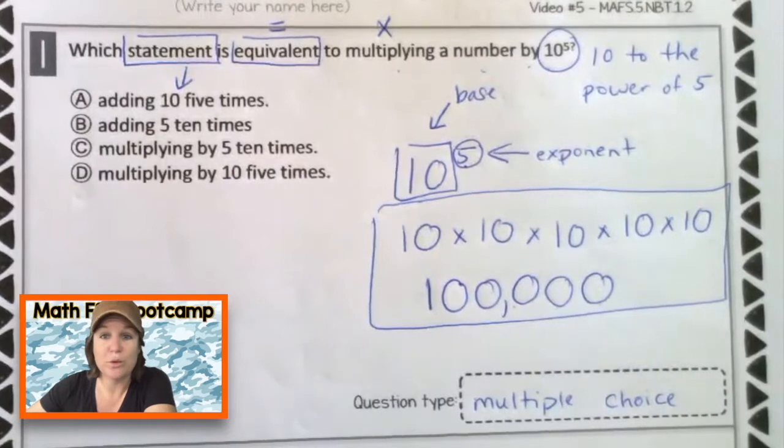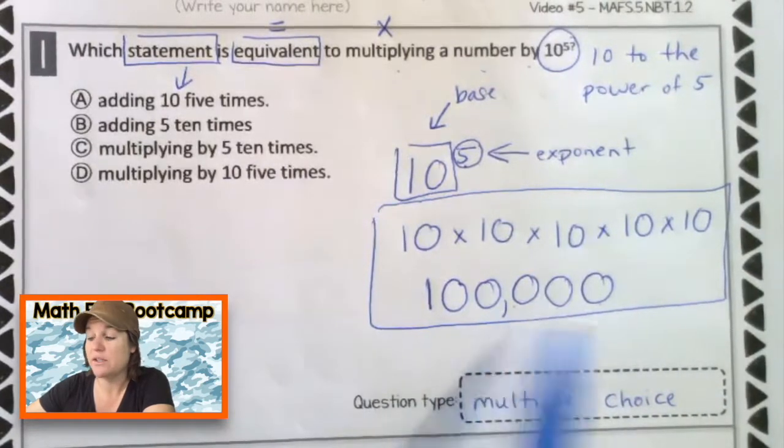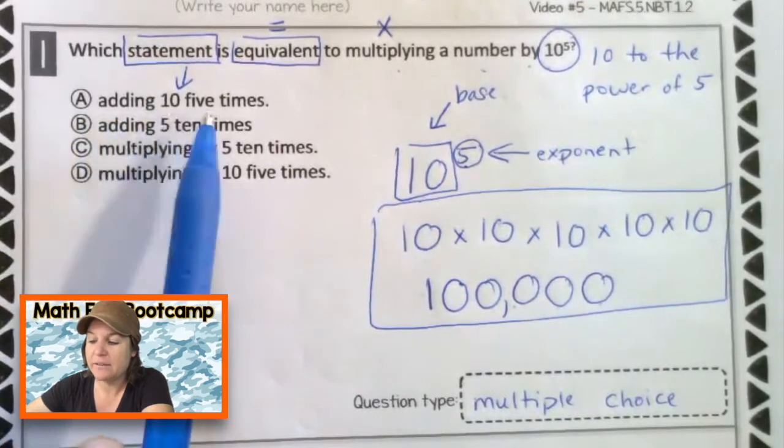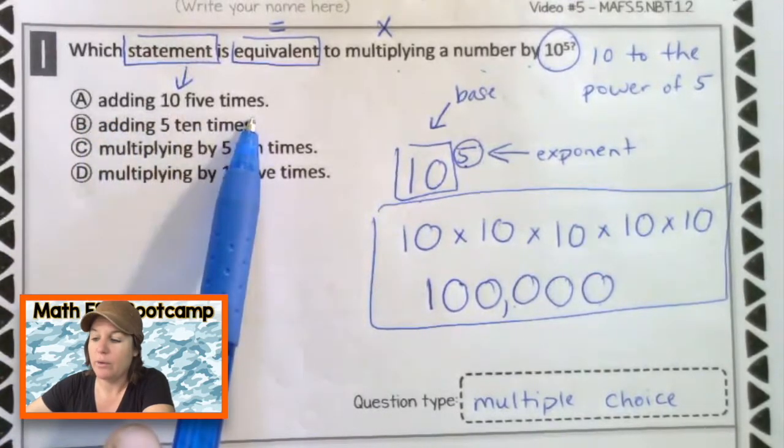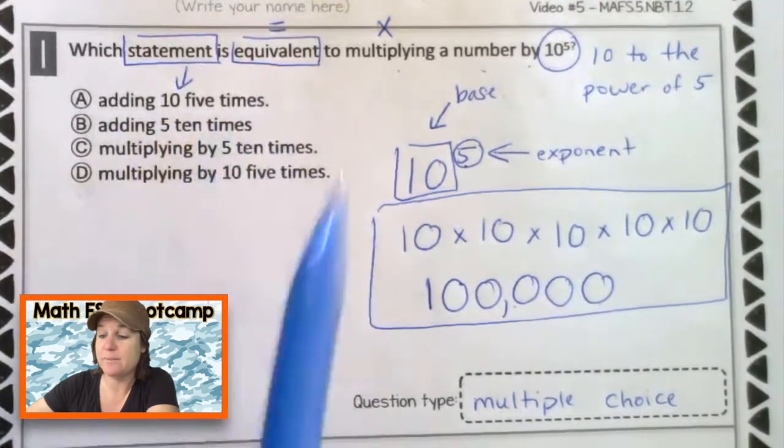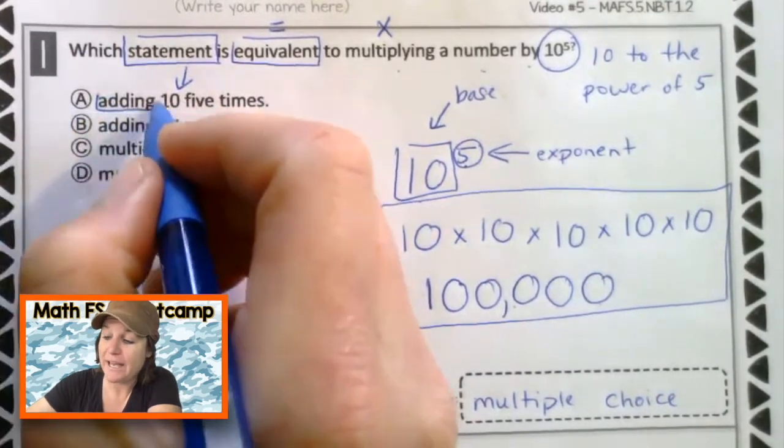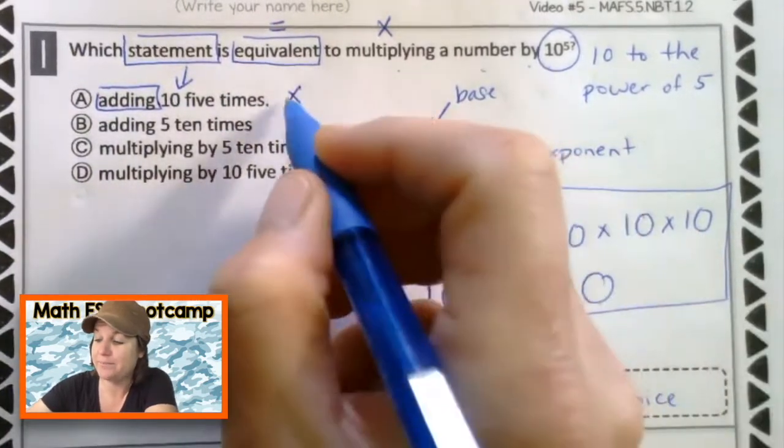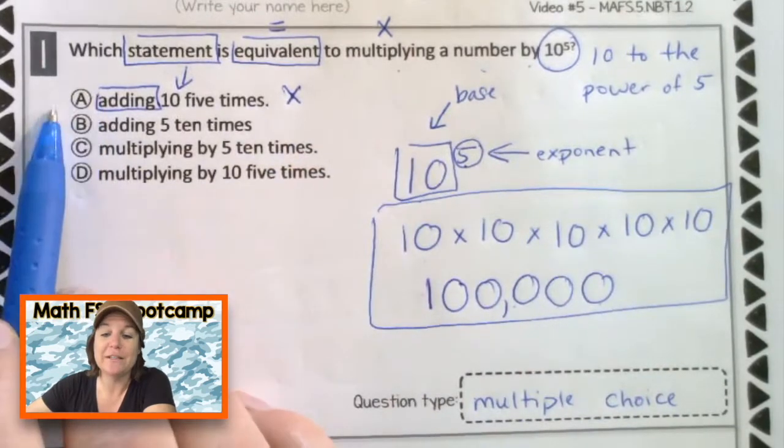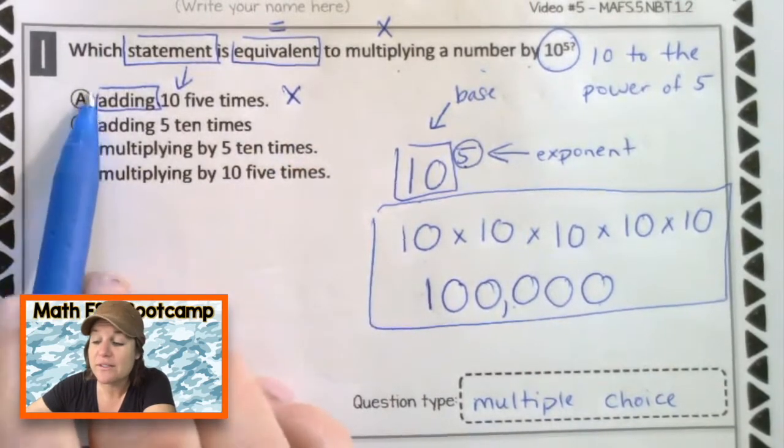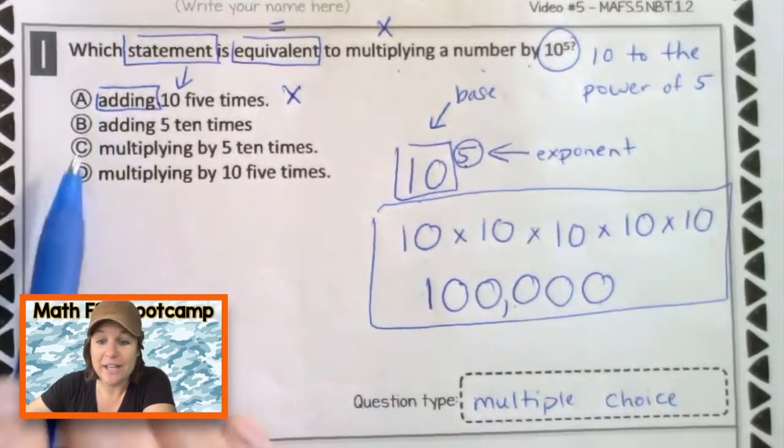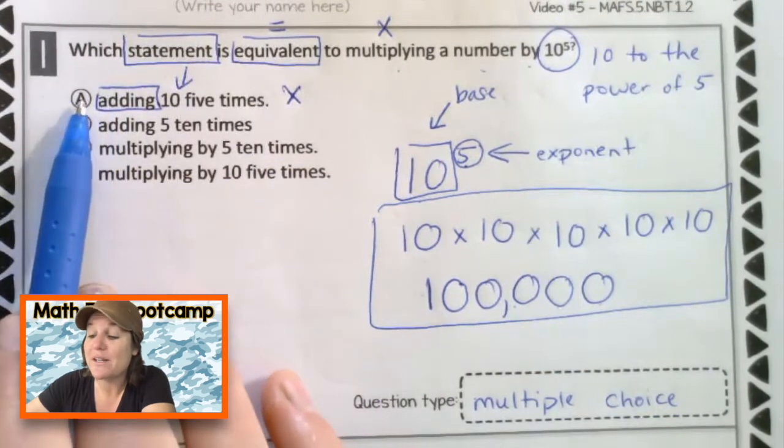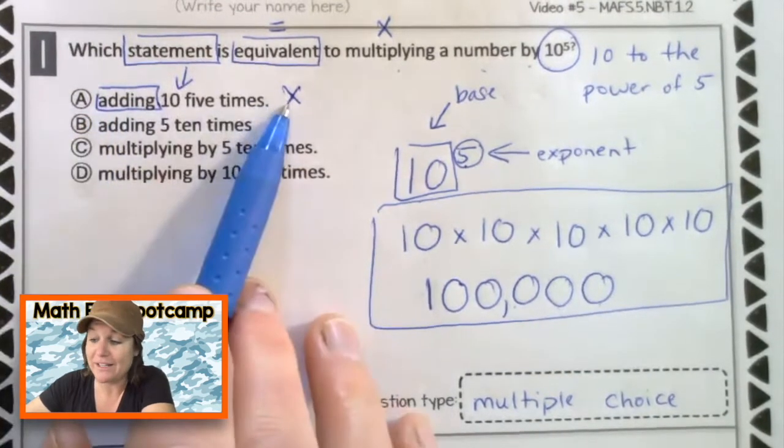So let's go ahead and look to see which answer choice matches up with our work that we just did over here with 10 to the power of five. We have A adding 10, five times. Well, we did do something with 10, five times, but it was not adding. Adding right there makes it wrong. So let's eliminate it. Also make sure when you're eliminating, you're not eliminating on the answer choice because a computer is going to scan your test. And if they see an X on one of the letters, it's going to think that you made that you meant to mark that answer. And we don't want that one. That's why we put it over here.